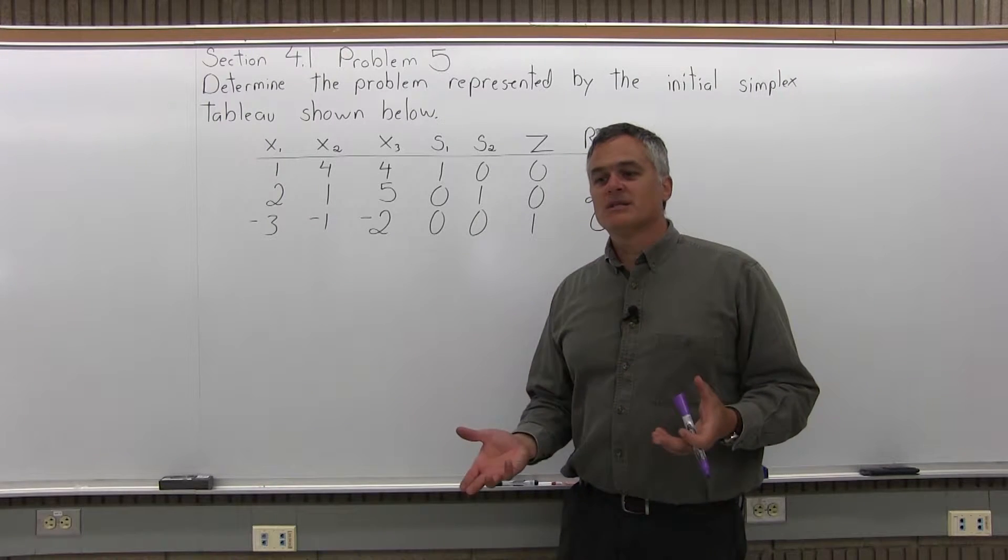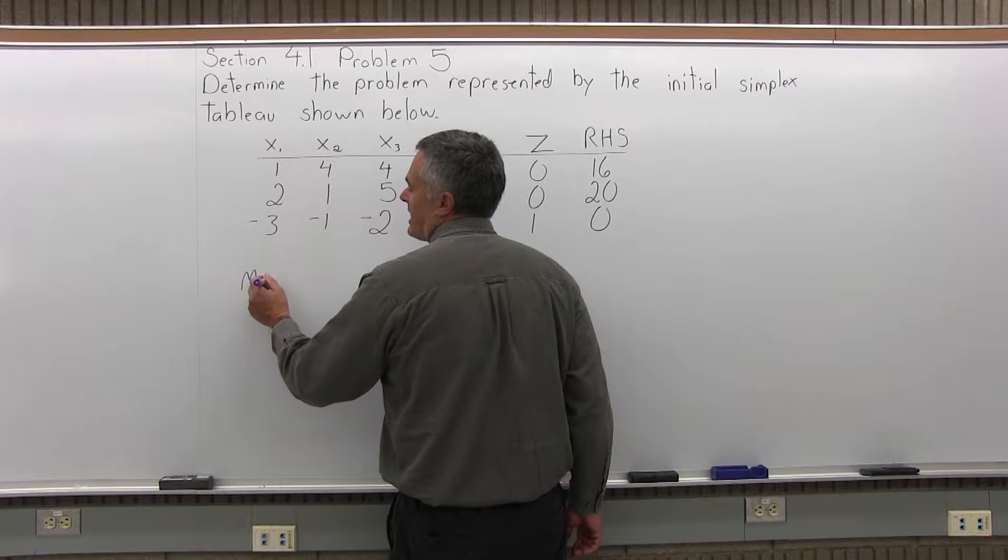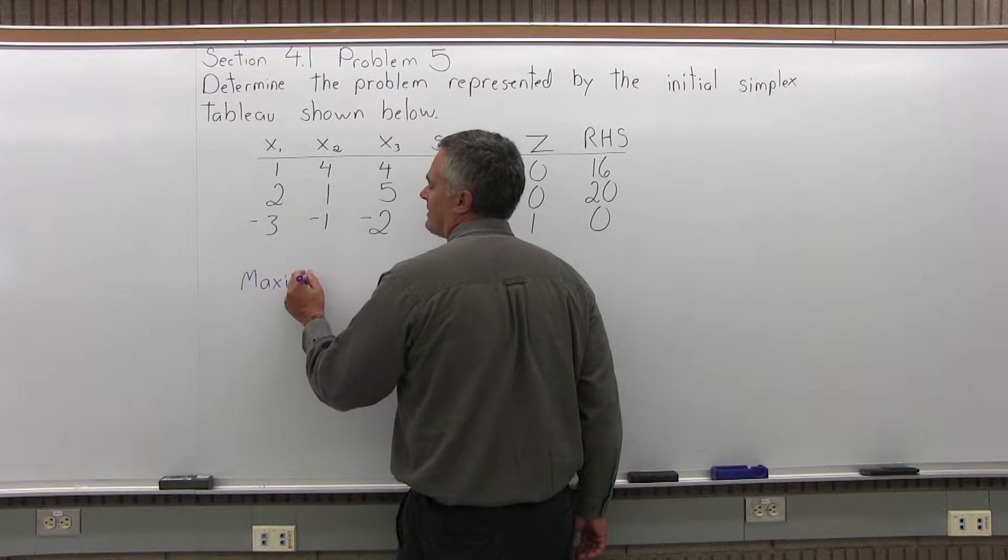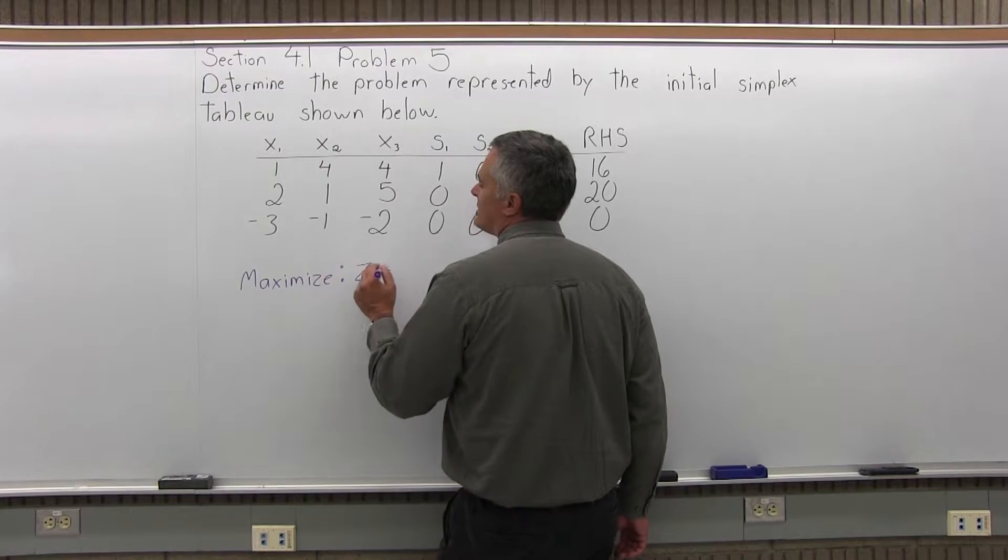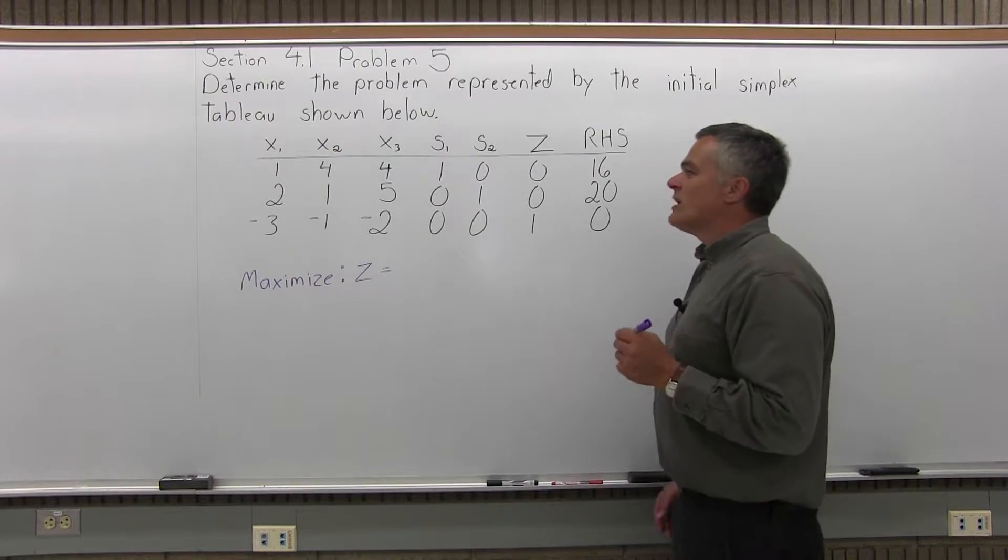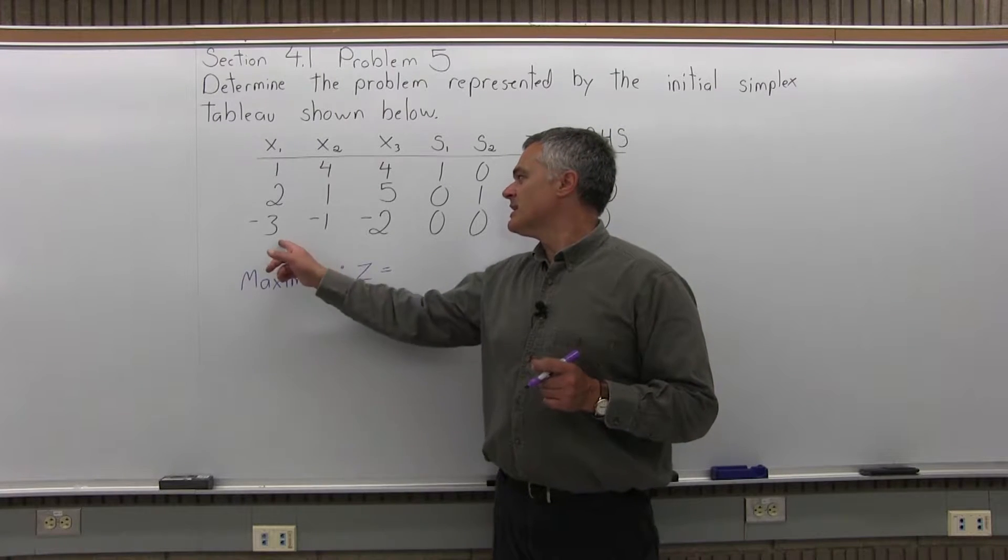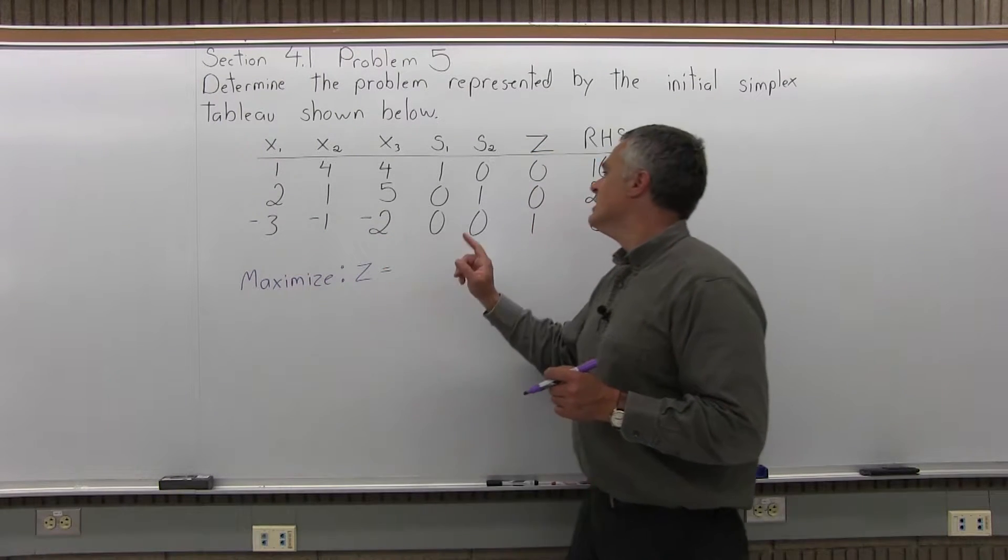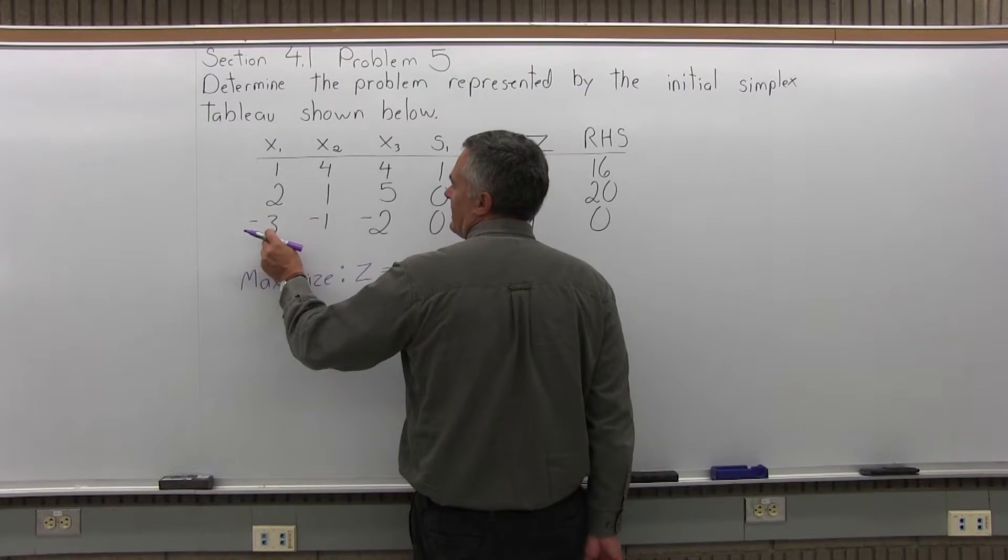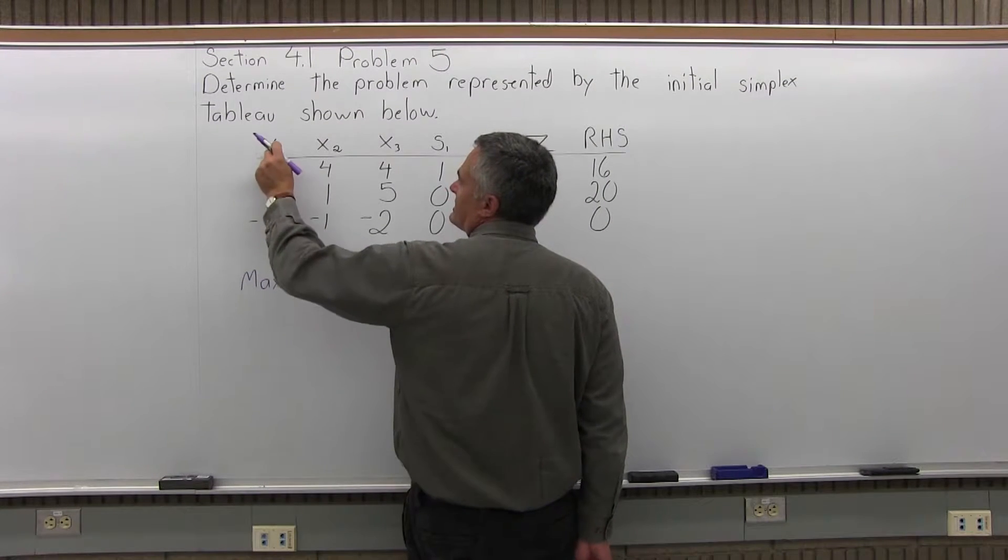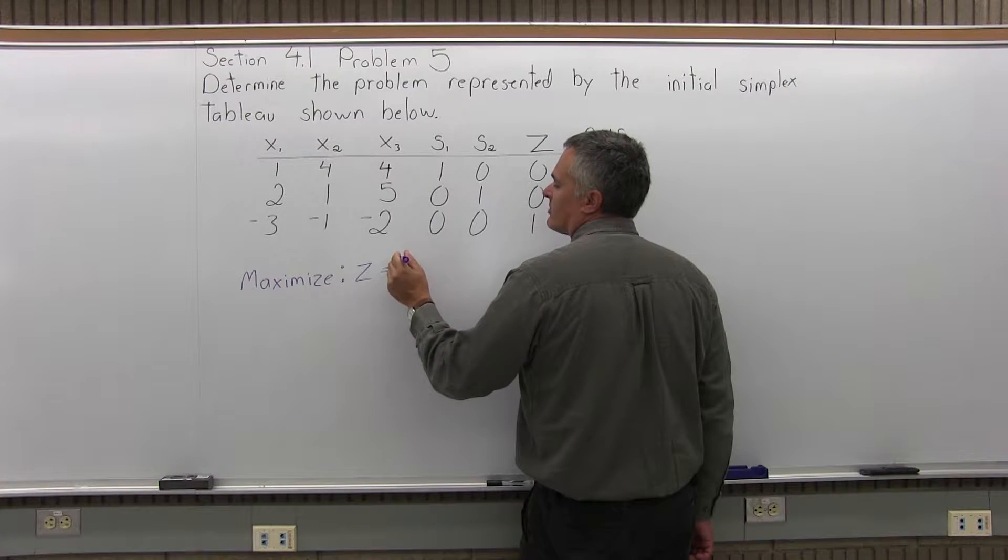So the problem is maximize something subject to something else. So what are we going to maximize? We'll have maximize Z equals. Now that objective function comes from the bottom row of your initial simplex tableau, which is -3, -1, -2, 0, 0, 1, 0. So the -3 in the beginning of that row is in the X1 column, so my objective function has 3X1, not -3.